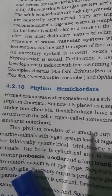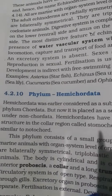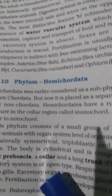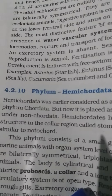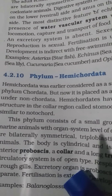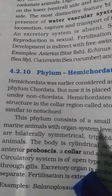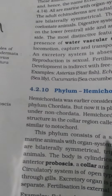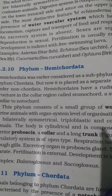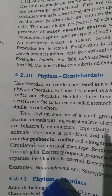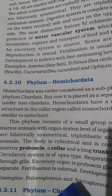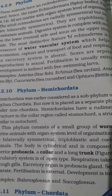Hemichordates are always worm-like organisms with a bilaterally symmetrical body. They are generally filter feeders with a sedentary lifestyle, always stuck to the mud, filtering water for food. They have a proboscis, a collar-like structure, and a long trunk. Example: Balanoglossus. Fertilization is external and the excretory organ is a proboscis gland.